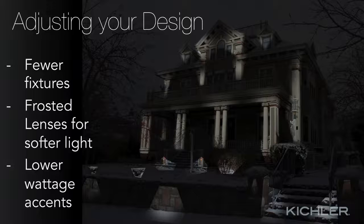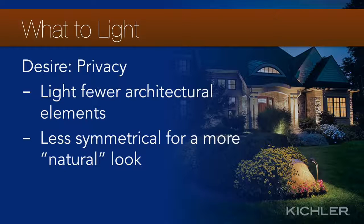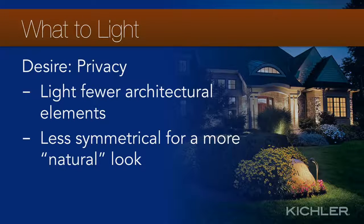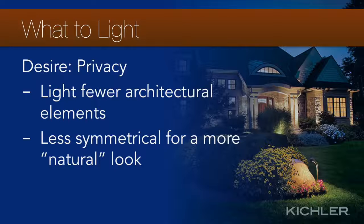Some clients prefer a lighting design that protects their privacy; others desire to show off their property. Get a sense of how much light they want by talking about how they think about their home. The architecture will help — a symmetrical, forceful facade with a prominent front entrance suggests a desire for show, while an asymmetrical facade with lots of different planes and a de-emphasized entrance suggests a desire for privacy. For privacy: strategically light architectural and landscape elements with larger dark intervals between lit areas, reduce lighting on the house while keeping landscape lighting constant, and use a less symmetrical, rhythmically varied approach for a more natural, private feel.